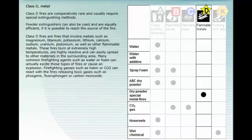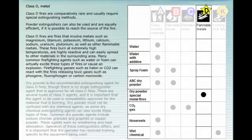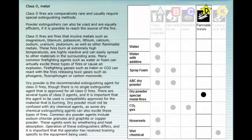These fires burn at extremely high temperatures, are highly reactive, and can easily spread to other materials in the surrounding area. Many common firefighting agents such as water or foam can actually excite these types of fires or cause an explosion. Fire fighting gases such as halon or CO2 can react with the fires, releasing toxic gases such as phosgene, fluorophosgene, or carbon monoxide. Dry powder is the recommended extinguishing agent for Class D fires, though there is no single extinguisher agent that is approved for all Class D fires. There are several types of Class D agents, and it is important that the agent to be used is compatibility approved for the material that is burning. Dry powder must not be confused with dry chemical agents, as some dry chemical extinguishing agents can also excite these types of fires.